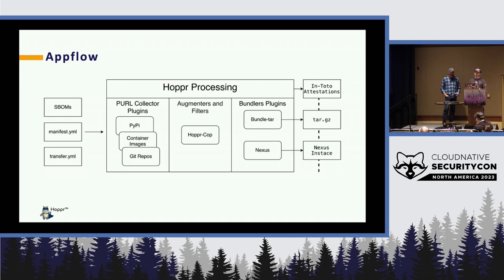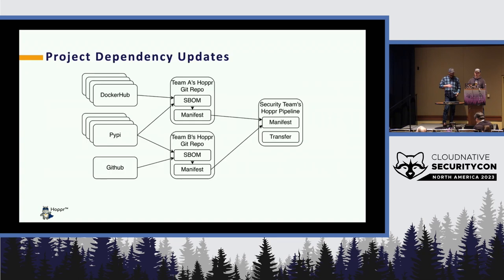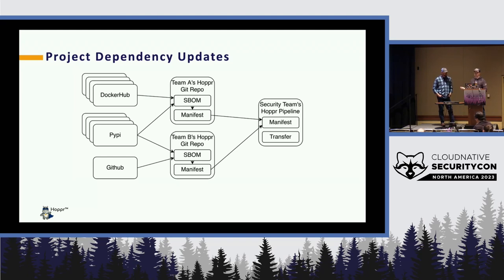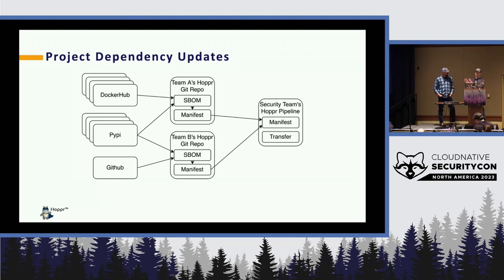Our primary goal is one data flow, one security team — and multiple teams have their own ability to specify what they want. As a team member, you can say 'I need to update these four packages' without needing permission. You just add it to your SBOM and say where to find it. The security team then has dependencies on those, can bring that stuff in, do additional testing if needed, and bring it over to the high side. The manifest also lets the security team restrict which package repositories and container registries are allowed.